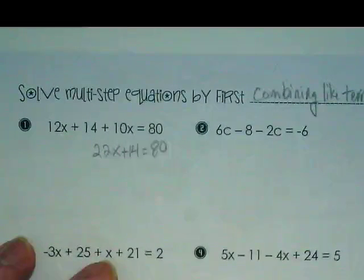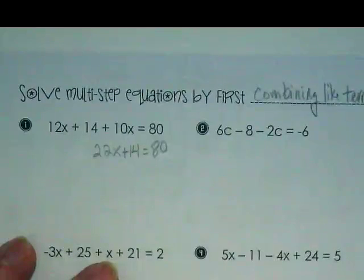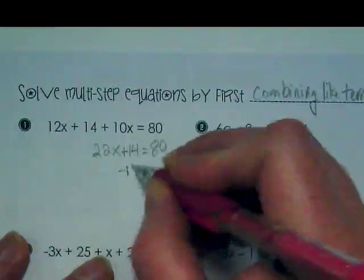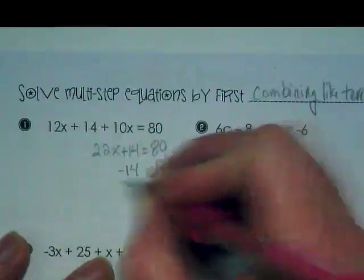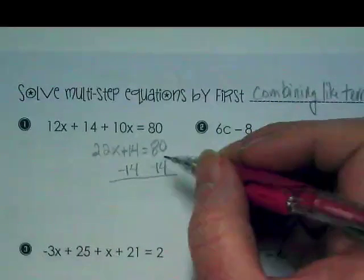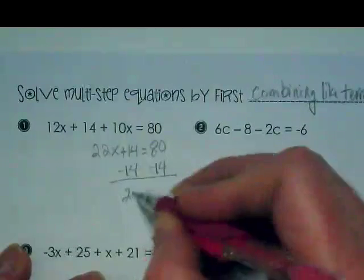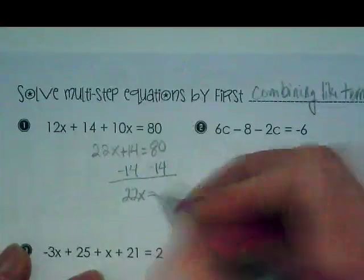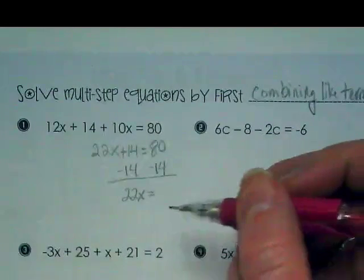Now we still have some like terms to combine here, they just happen to be on the opposite sides of the equal sign. What needs to be combined next? 14 and 80. So we're going to subtract 14 from both sides. That leaves us with 22x is equal to 66.